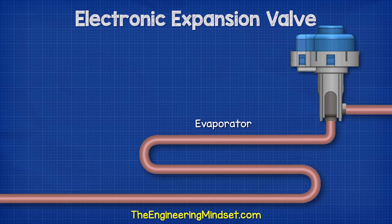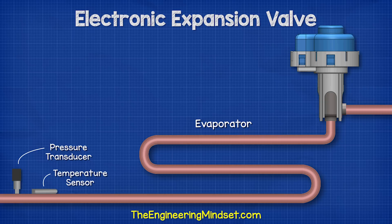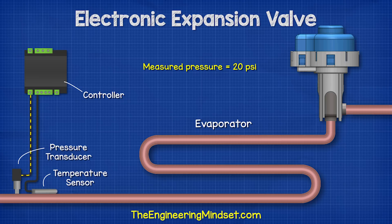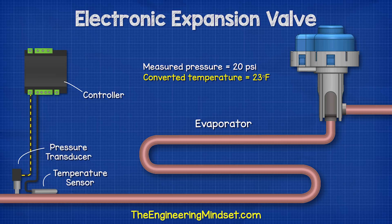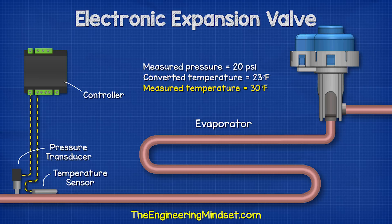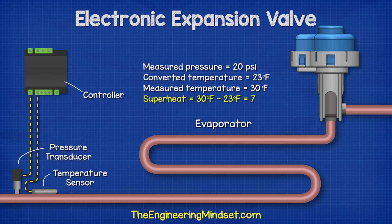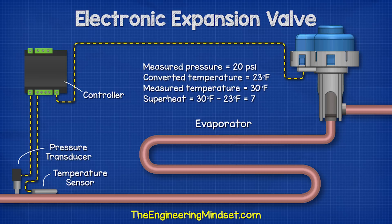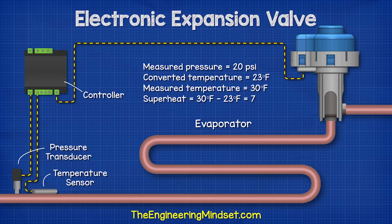At the outlet of the evaporator we find a temperature sensor and a pressure transducer which are constantly measuring the refrigerant. The controller reads this signal and converts the pressure to find the saturation temperature of the refrigerant using refrigerant data stored in the controller. The pressure reading is converted into its equivalent temperature for that refrigerant. This is then compared to the actual temperature being measured. The difference between these two is the operating superheat. The controller then decides if the valve should open further to allow more refrigerant or close slightly to reduce the amount entering.